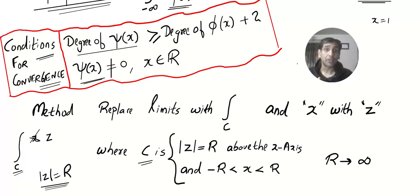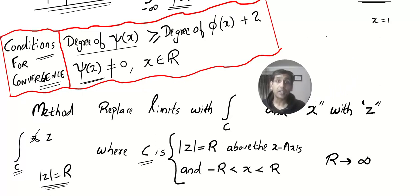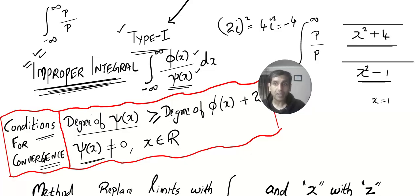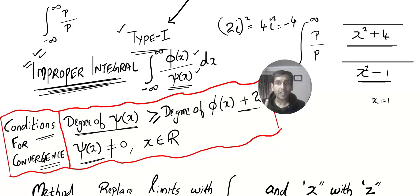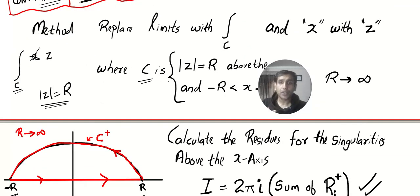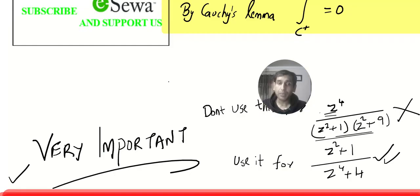Hello friends, welcome to Susan and John MapTube. We are doing applications of complex integrals, learning Type 1 — how to solve the improper integral from minus infinity to infinity of polynomial divided by polynomial, where the degree of the denominator is at least two more than the degree of the numerator, the denominator should not become zero for any real number, and the limit is from minus infinity to infinity.